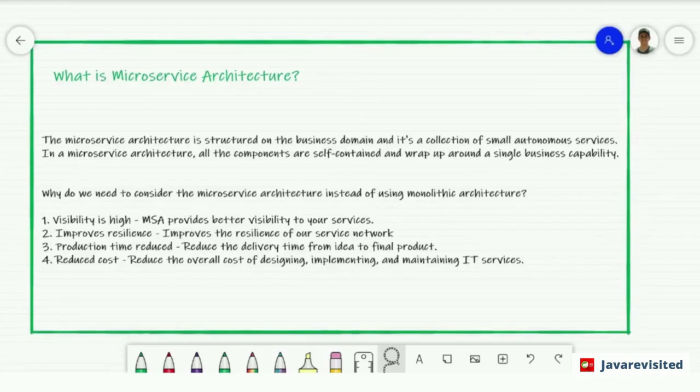So why do we need to consider the microservices architecture instead of monolithic architecture? Visibility is high. MSA provides better visibility to your services and improves its resilience on our services network. Production time is reduced - we reduce delivery time from idea to final product. Also reduced cost - we reduce the overall cost of designing, implementing, and maintaining IT services.